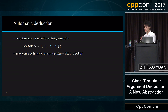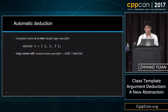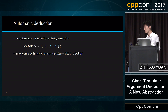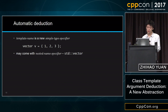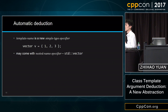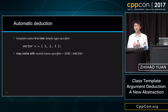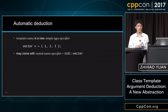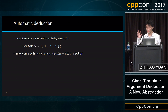So what does automatic deduction give you? First, it gives you a new syntax: an initializer followed by a type name, which can of course be qualified. What does it mean that you can use a template name in place of a simple type specifier? Auto is a simple type specifier, which means you can use the new syntax of class template argument deduction in almost all the same places where auto can be used — with a few plus-or-minus exceptions.